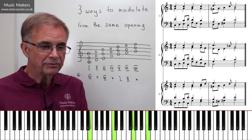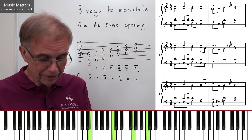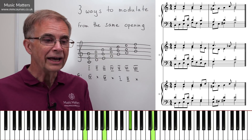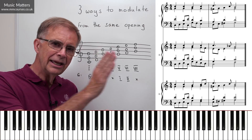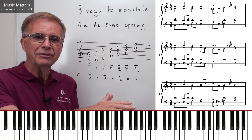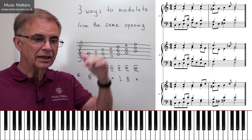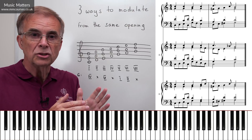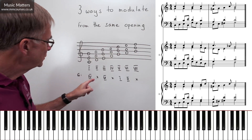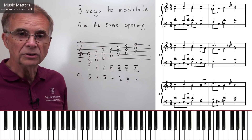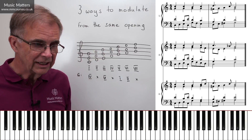Because I've used that as a pivot chord, I can now go straight into the new key. At the beginning of the second bar, I have chord V in the key of G major. Everything to the left of the pivot chord is in C major, everything to the right is in G major, but that pivot chord — the last chord of the first bar — is the door taking us from C major into G major.